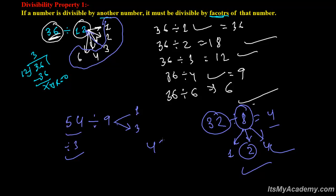Similarly, take 42. 42 is divisible by 14 — 14 times 3 is 42. So 42 must be divisible by the factors of 14 as well.